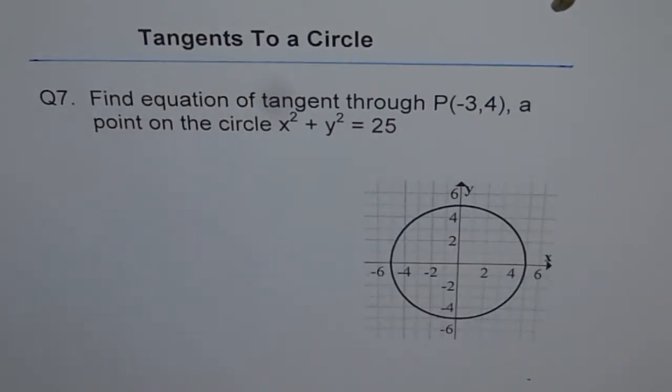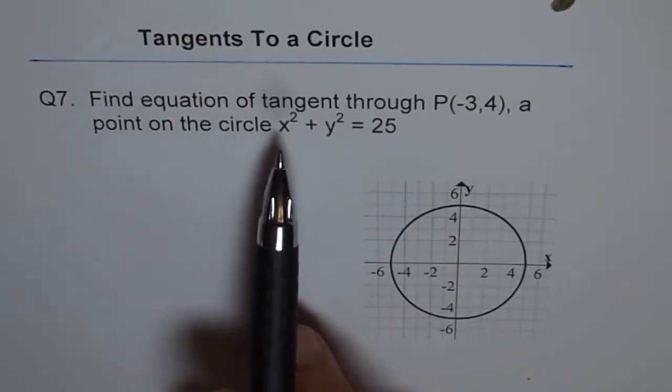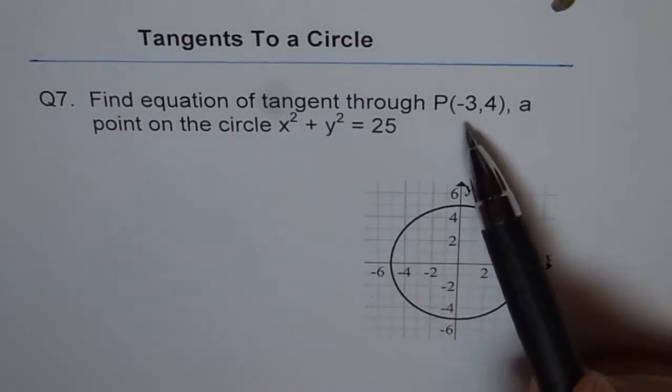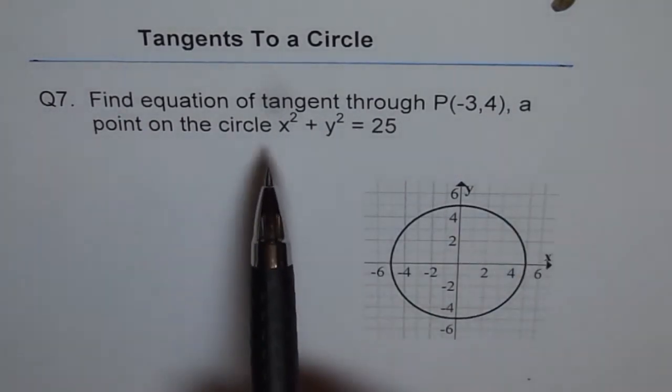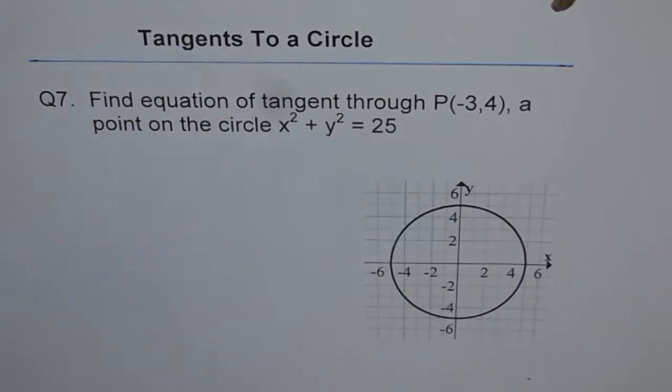Tangents to a circle. Question 7. Find equation of tangent through point (-3, 4), a point on the circle x² + y² = 25.